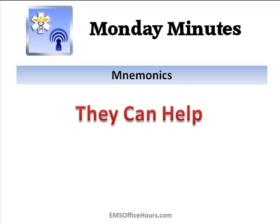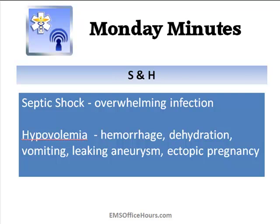Basically, it's about shock and helping you remember the different types of shock. So the S and H of SHRIMP: first is septic shock or sepsis — most of the time that's a gram-negative infection or an overwhelming infection. Then hypovolemic shock, which is probably the most common one. That includes hemorrhage, dehydration, vomiting, diarrhea, peritonitis, pancreatitis, a leaking aneurysm, or even an ectopic pregnancy.